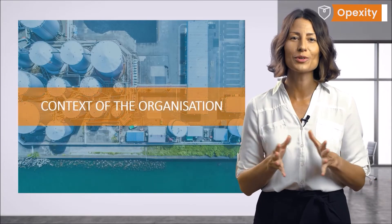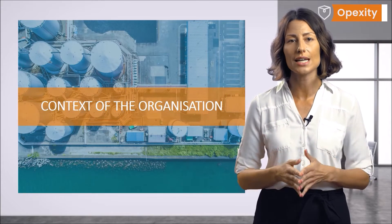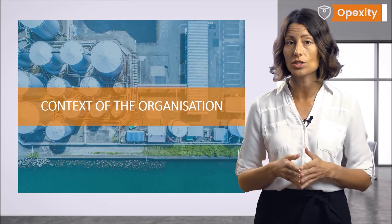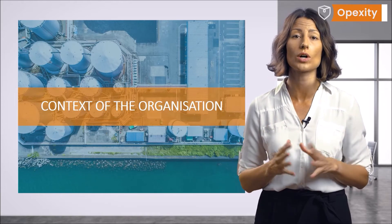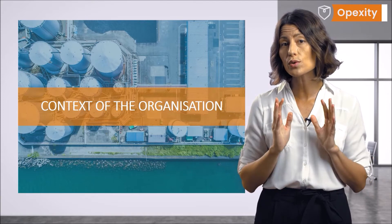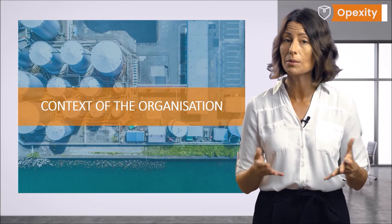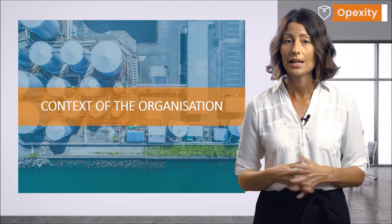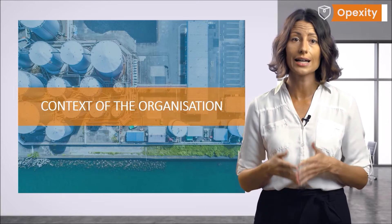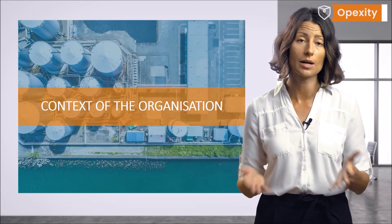Now let's move on to the requirements of the standard, starting with the context of the organization. Defining the context of the organization should be the first step in describing the risk management model within the company. This is also the first step in implementing the management system, including the environmental management system. If it is a risk-based system, we can establish and enact a system that will be effective, efficient, and adapted to the company's needs.